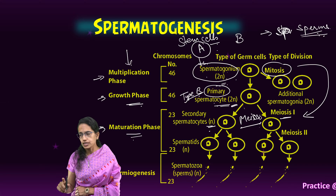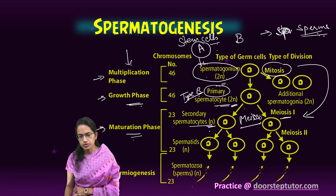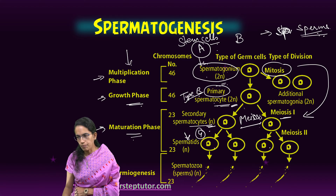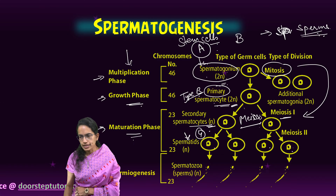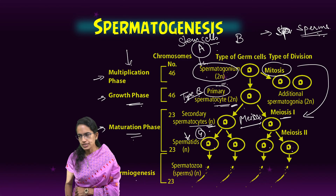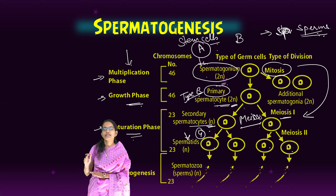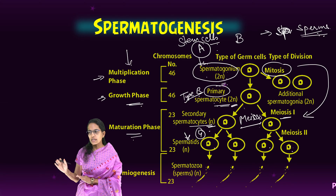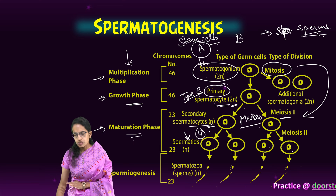After the formation of secondary spermatocytes, spermatids are formed, and they are four in number. Four spermatids are formed, and then finally is the stage of differentiation — spermiogenesis — where spermatids differentiate into spermatozoa. This process of sperm formation takes around 64 days.